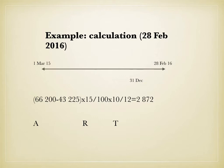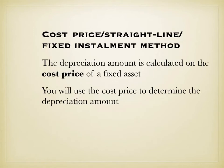The second method is the straight line or fixed installment method. Here, the depreciation amount is calculated on the cost price of the fixed asset. We do not subtract accumulated depreciation from the cost price to determine the depreciation amount — we purely use the cost price.